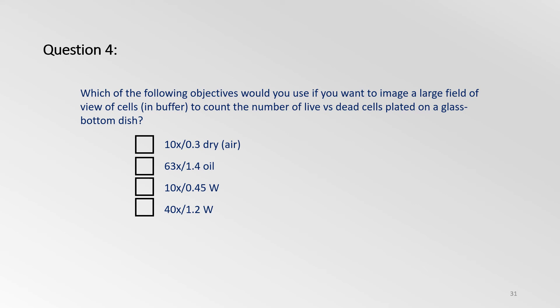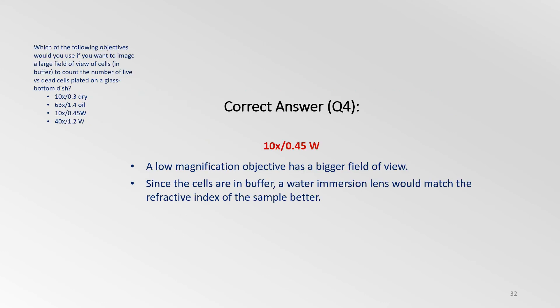Now let's say your goal is to image a large field of view of cells in a buffer solution to count the number of live versus dead cells. Which of the following objectives would you use? A 10x 0.3 dry objective? A 63x 1.4 oil? 10x 0.45 water immersion? Or a 40x 1.2 water? Now you would want a low magnification objective so that you'd have a bigger field of view. That would be the 10x objective. And since your cells are in buffer solution, a water-immersion objective would provide the optimal image quality. So your answer should be 10x 0.45 water-immersion objective.